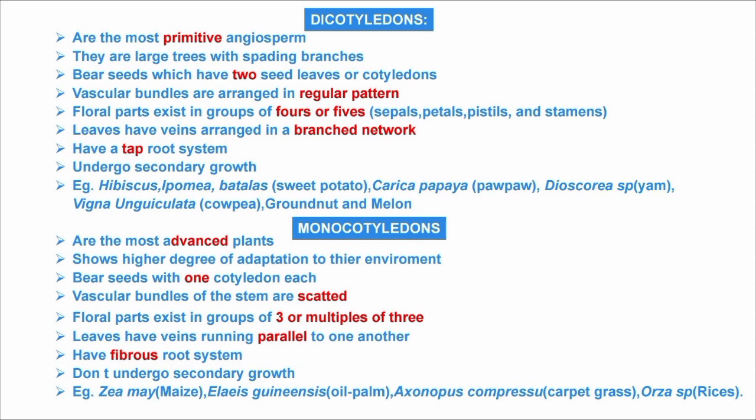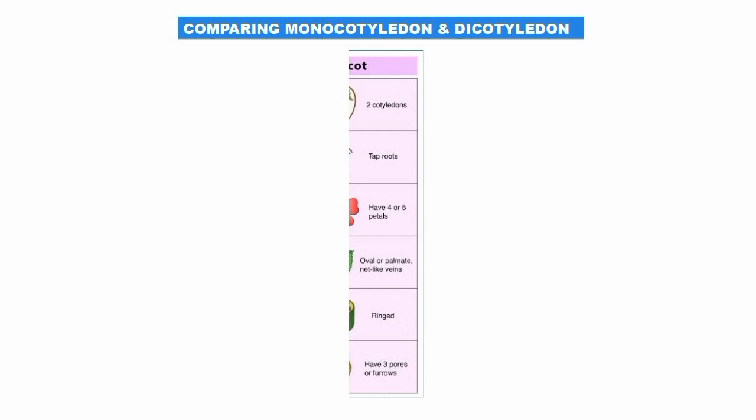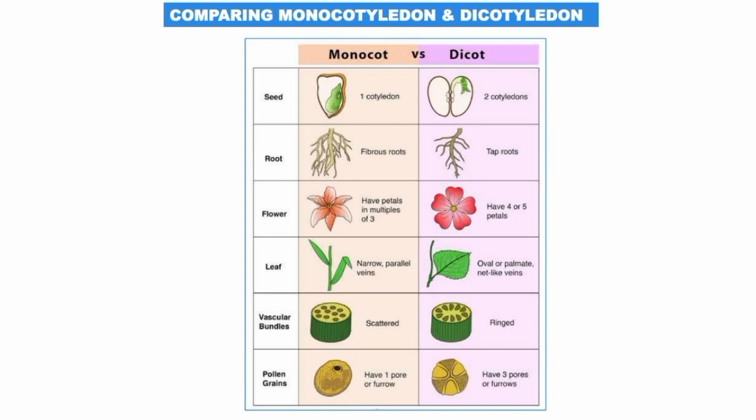Comparing monocotyledons and dicotyledons: under seed — monocotyledons have one cotyledon, dicotyledons have two. Under roots — monocotyledons have a fibrous root, dicotyledons have a tap root. Under flowers — monocotyledons have petals in multiples of three, dicotyledons have four or five petals. Under leaves — monocotyledons have narrow, parallel-veined leaves; dicotyledons have branching-veined leaves. Under vascular bundles — monocotyledons have scattered bundles, dicotyledons have bundles arranged in a ring.